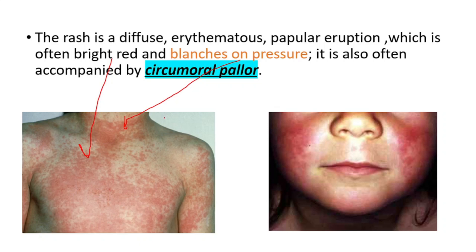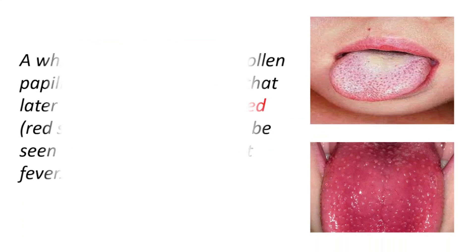Scarlet fever is also accompanied by circumoral pallor: the cheeks are red, but around the mouth there is whiteness. This is characteristic for scarlet fever.